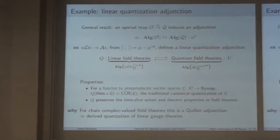And this is a very nice adjunction, because for one, it's actually reasonable to call it a quantization adjunction, because for a functor on two presymplectic vector spaces, if you take the Heisenberg Lie algebra of that presymplectic vector space, we get the traditional quantization of this thing. And Q preserves the time-slice action, which is nice, because that's what's needed for field theories, and it also preserves descent properties, which is basically like saying that your theory is defined by its behavior on a certain set of nice spacetimes, like, for example, contractible spacetimes.